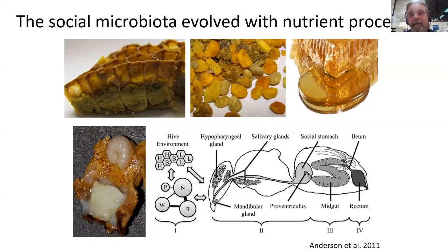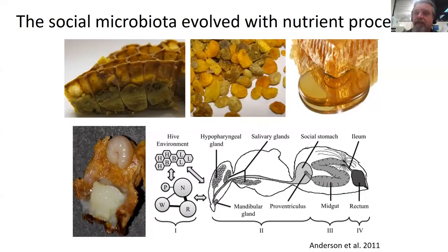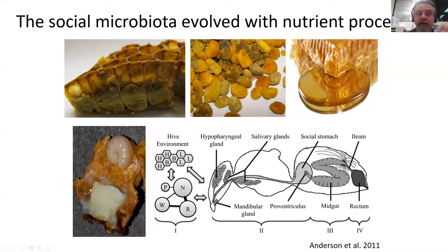The social microbiota evolved with nutrient processing, similar to the gut microbiota evolving with the diet going through it. Nutrient processing — bubbling in the crop, moving back and forth — involves extensive water control, especially here in Tucson where it gets really hot. I've listed bee bread, honey, and larvae as internal sources, and pollen, nectar, water, and resins as sources from outside. All of these have an effect on the social microbiota. The social microbiota affects what is in the gut. The hypopharyngeal gland has its own microbiome — up to 10 to the 5th bacteria in the gland.